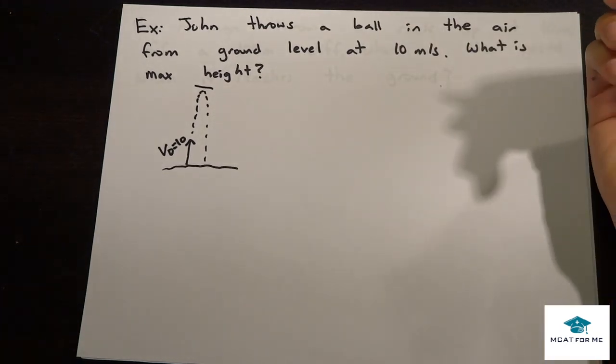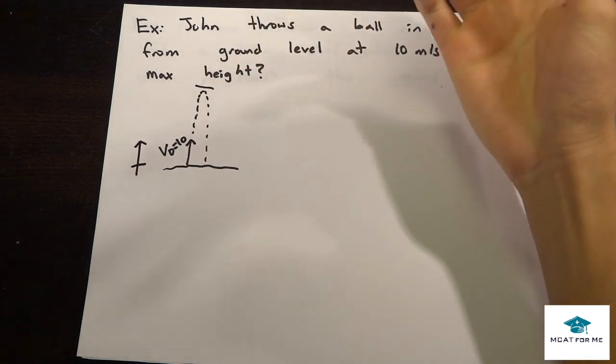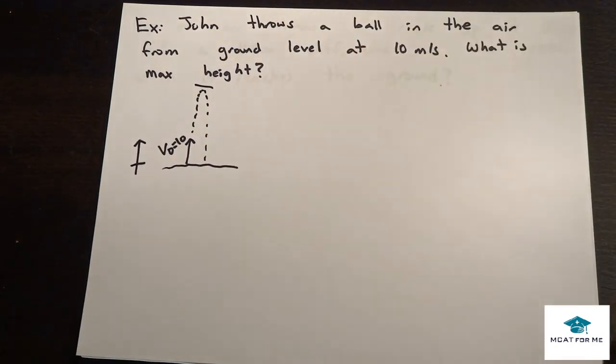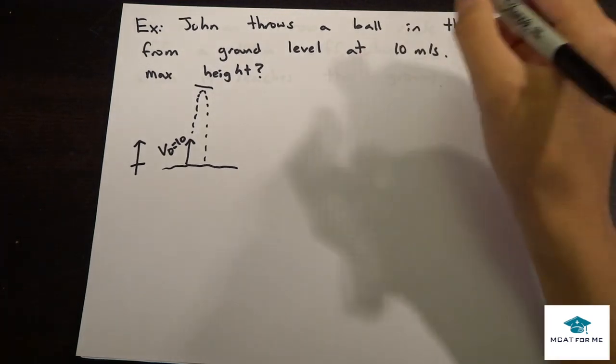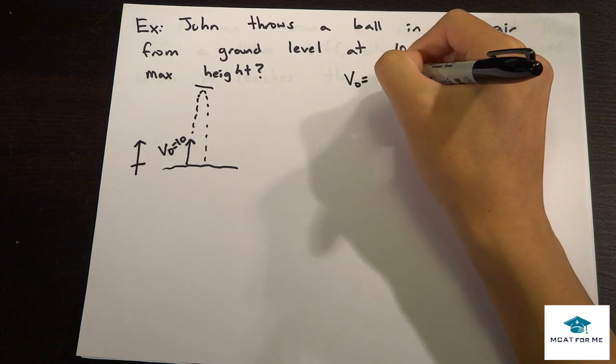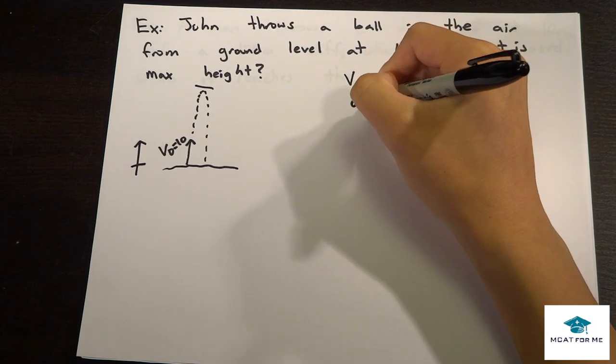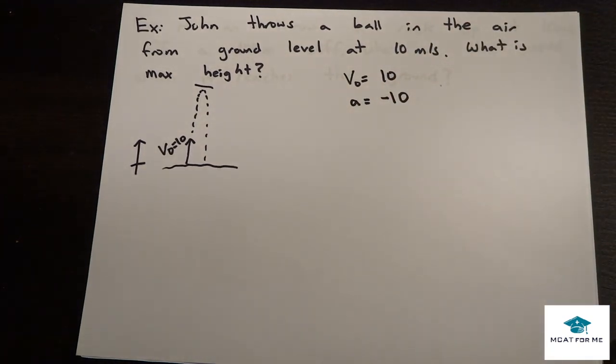Let's do the second step, which was pick a coordinate system. I'm just going to say positive is going up, so V0 would be positive and acceleration would be negative. What are our knowns? What do we know? We know V0 equals 10. We also know acceleration equals negative 10.